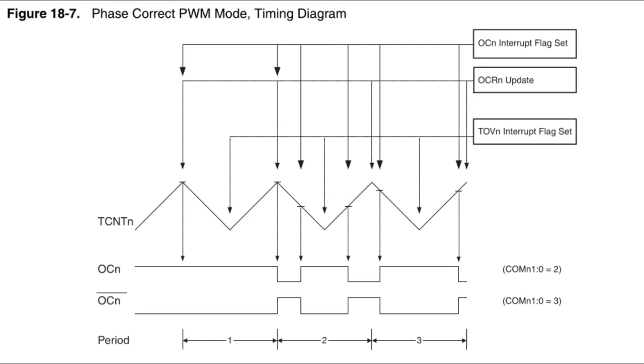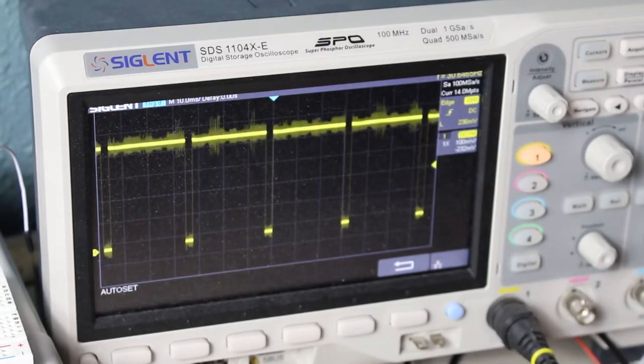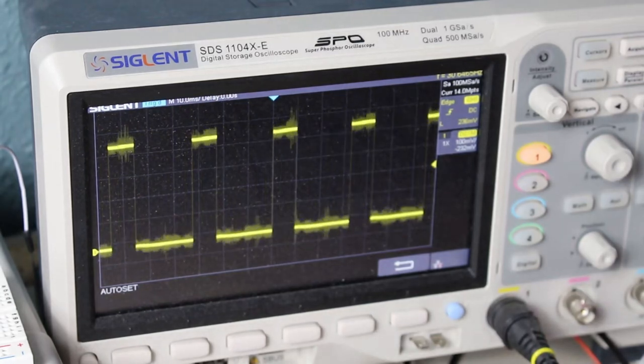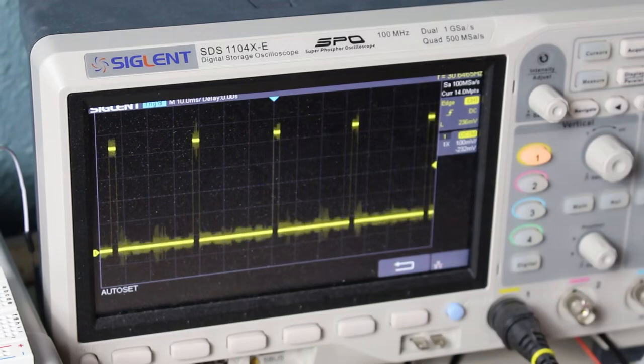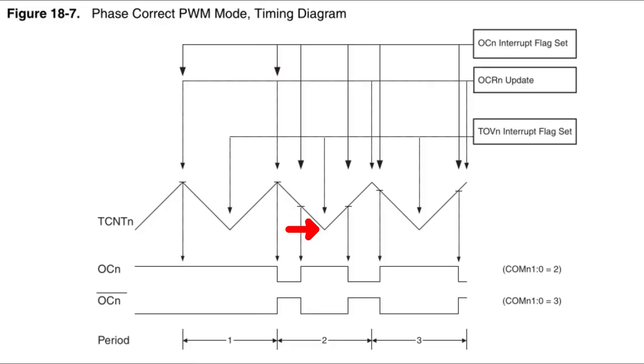Well, for most applications, they are equivalent, and you should probably just use the Fast PWM mode for simplicity and speed. But Phase Correct PWM can be useful if you want to make a measurement at the center of the PWM waveform, since the timer's behavior is symmetrical.